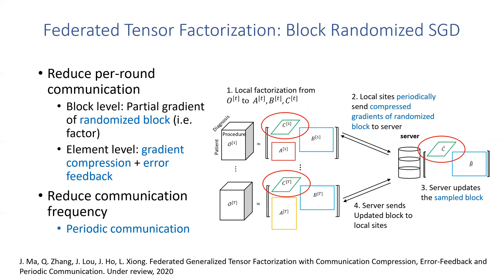At the element level, each client uses gradient compression to compress each element of the partial gradient — for example, from floating point to a low precision representation. The compression naturally introduces error between the true gradient and the compressed one, which can affect the convergence and output quality.